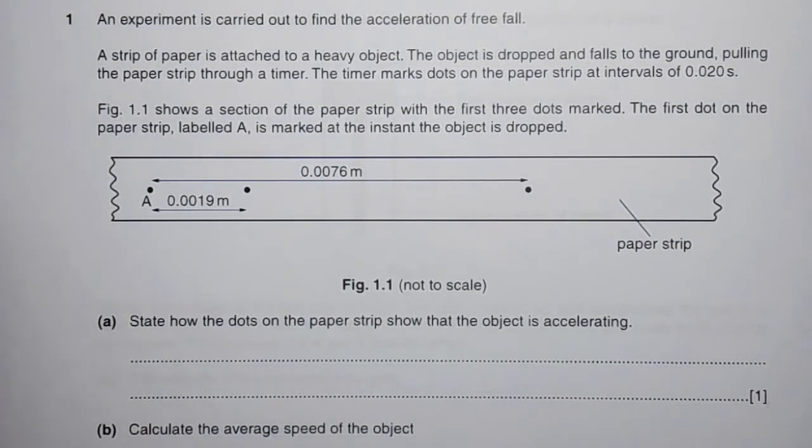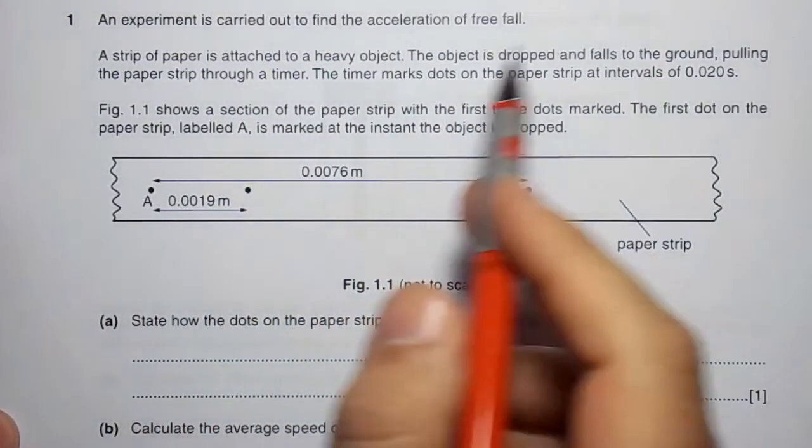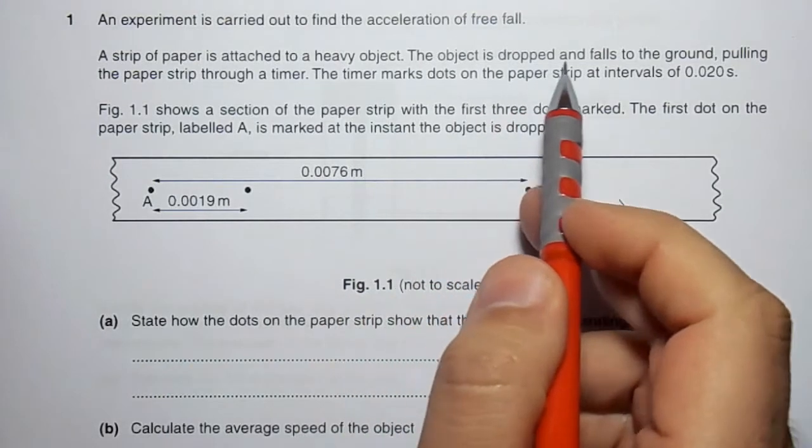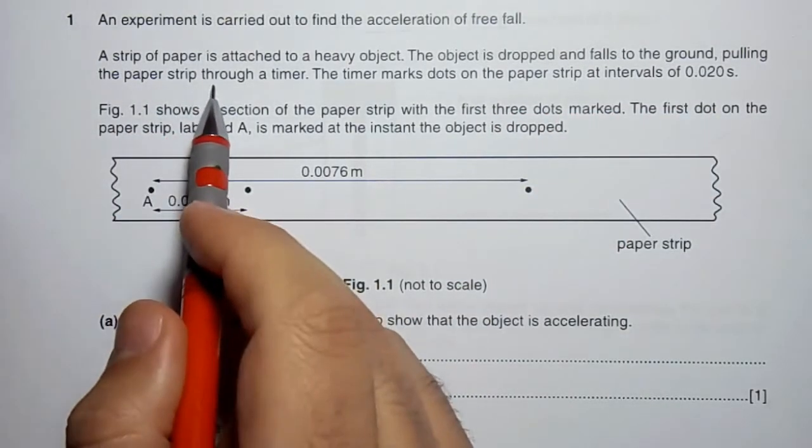An experiment is carried out to find the acceleration of free fall. A strip of paper is attached to a heavy object. The object is dropped and falls to the ground, pulling the paper strip